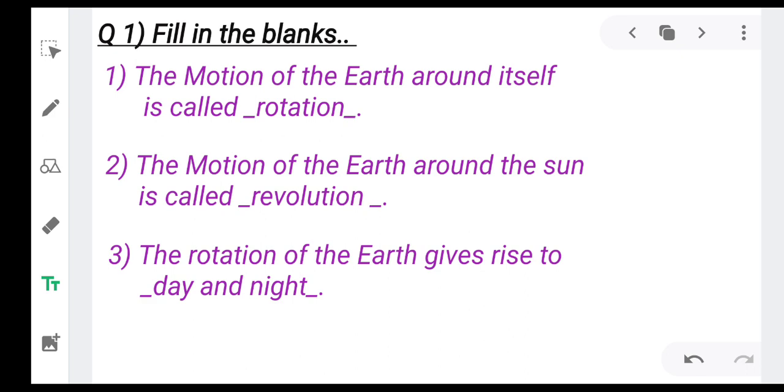Question one, fill in the blanks. The motion of the earth around itself is called rotation. Here you have to underline the word rotation. Number two, the motion of the earth around the sun is called revolution. You have to underline the word revolution. And the third one is the rotation of the earth gives rise to day and night. Here you have to underline it.